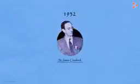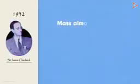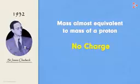It was around the year 1932 when a famous English physicist Sir James Chadwick found the third subatomic particle. He found that the particle had a mass almost equivalent to that of the proton. And what about its charge? Astonishingly, it had no charge. Yes, the particle was neutral.